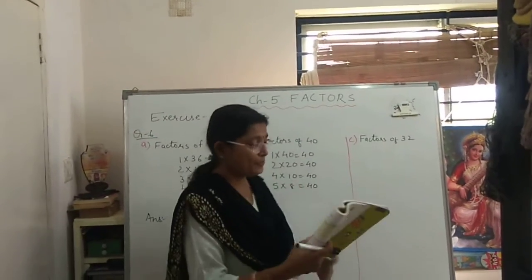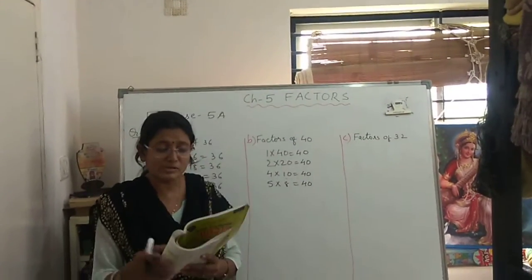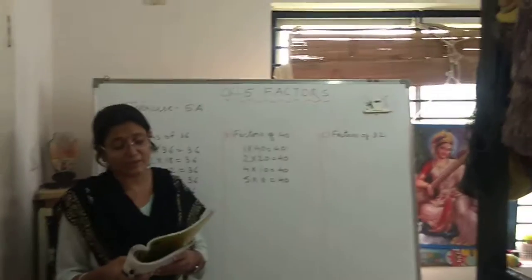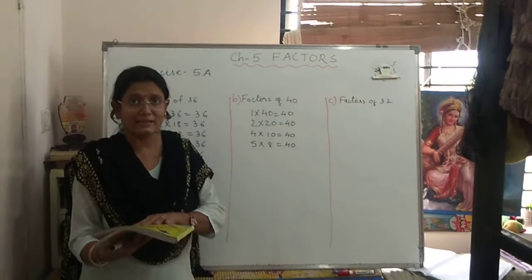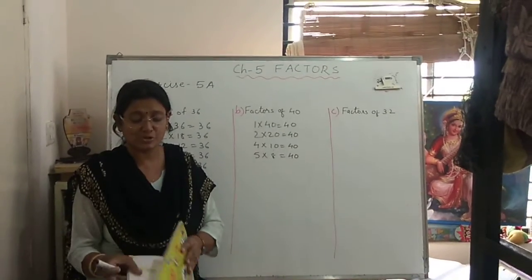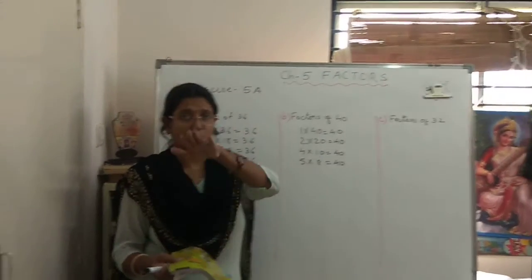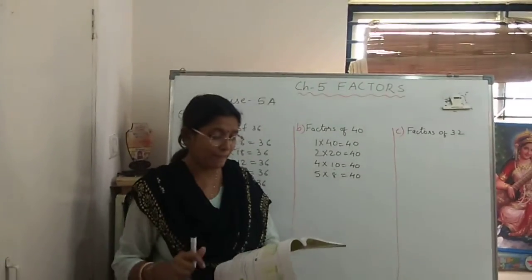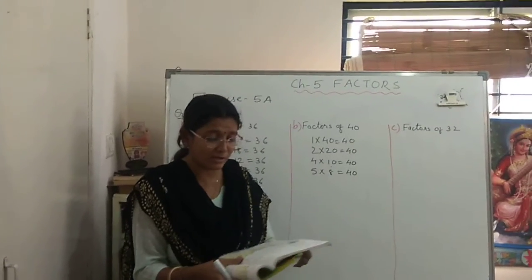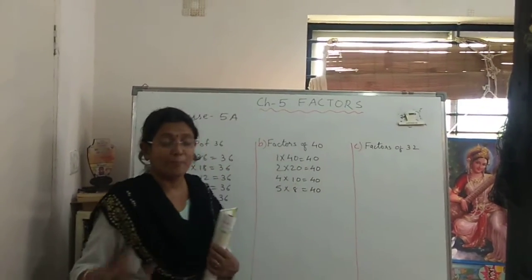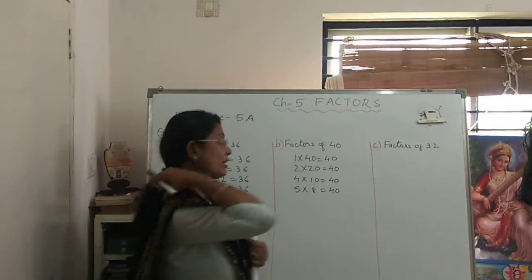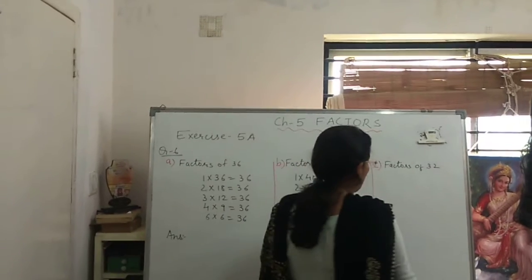Now number C. 32 boxes of sweets have to be kept in equal piles. Again, think that this is a box. Then like this, 32 boxes are there which you have to keep in a pile, one above the other, in equal piles. What are the piles of equal numbers of boxes that can be made? Again, we have to find how many piles can be made of equal number. Again, you have to find the factors of 32.